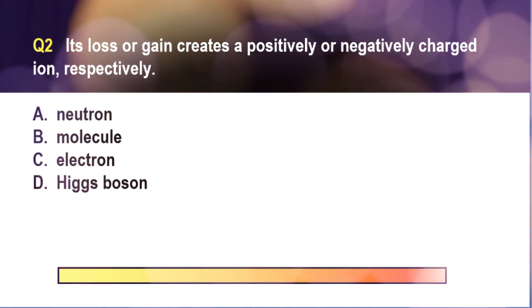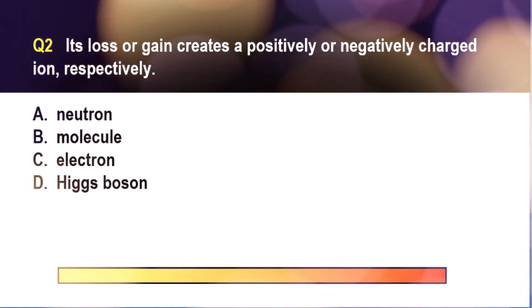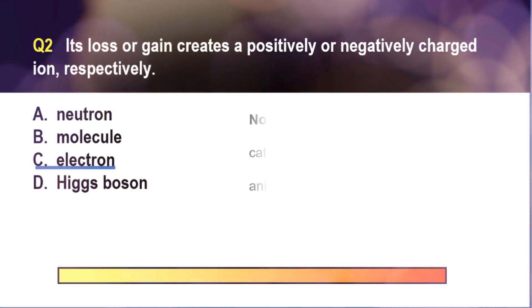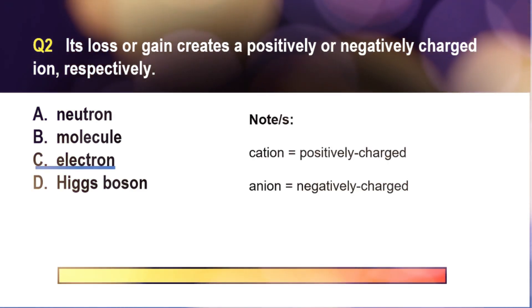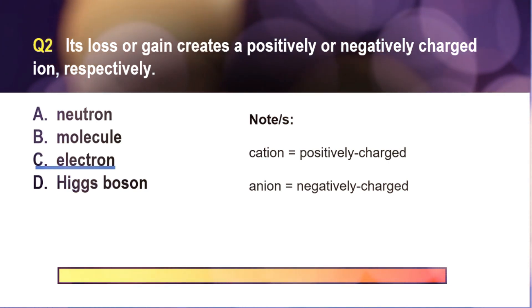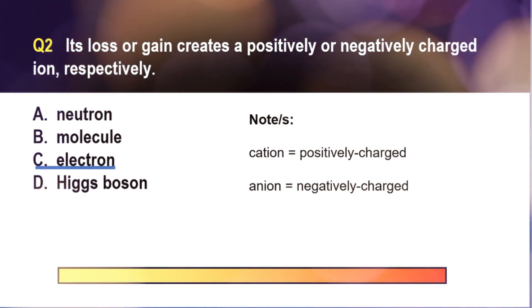The correct answer is letter C. If the atom loses electrons, the atom becomes positively charged and it is then called a cation. If the atom gains electrons, then the atom becomes negatively charged. In this case, it is called an anion.